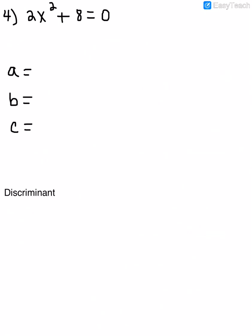We have one more. This quadratic equation has only two terms, but it's already in standard form — everything's on one side in descending order. a is the coefficient of x squared, so a is 2. There's no x term, so b is 0. And c, the constant, is 8. Note that b or c can be 0 in a quadratic equation, but a cannot be 0 or it's no longer quadratic.